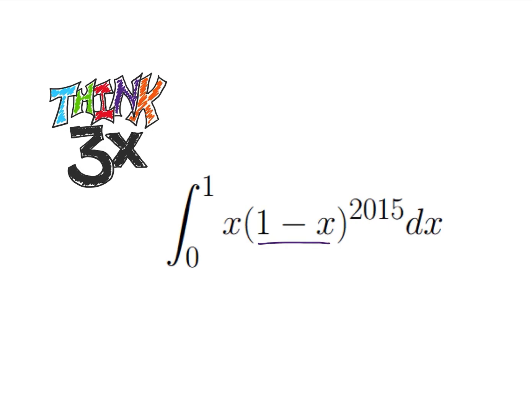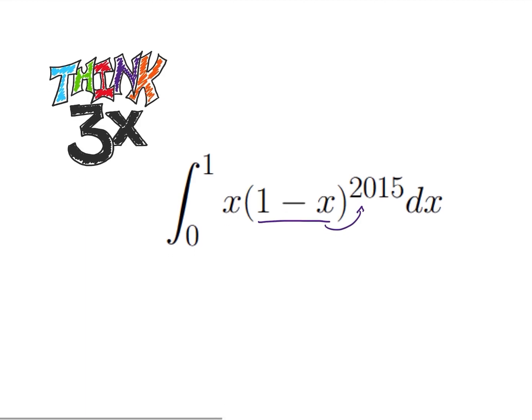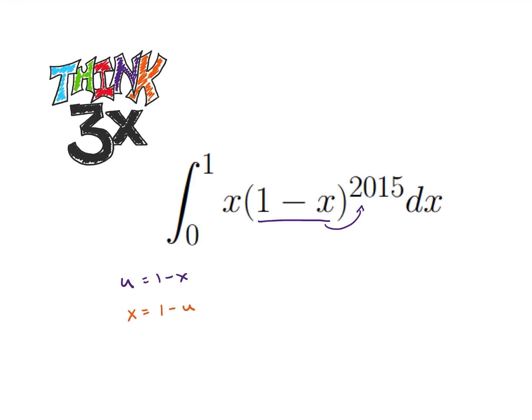We obviously have this 1 minus x raised to the 2015. We don't want to multiply that through. That would be a nightmare. But what we can do is make u equal to 1 minus x. That would give us that x is equal to 1 minus u. And then du would be equal to negative dx, which tells us that dx is equal to negative du.